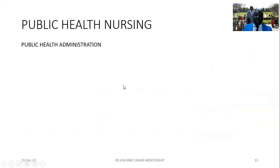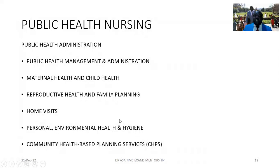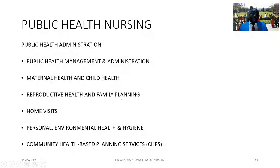Public health nurses also have three written papers. The first paper includes public health management and administration, maternal and child health, reproductive health and family planning, home visits, personal and environmental health, and community health-based planning services. As a public health nurse, you should know how to set up a child welfare clinic, how to conduct routine and special home visits, manage the home system bag and its contents, and cover all family planning services. If you don't revise these areas, you will find yourself wanting when you get to the exam.